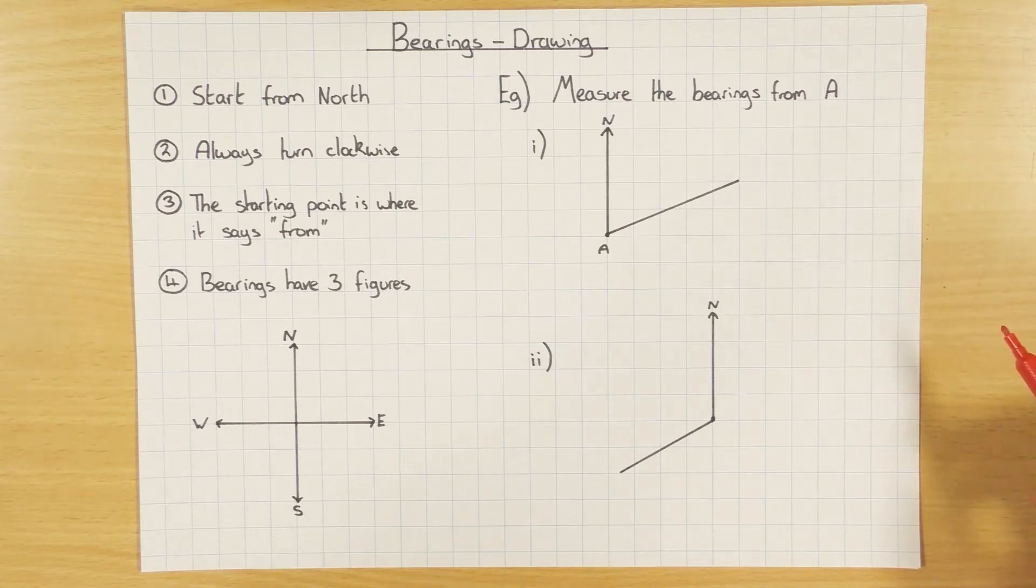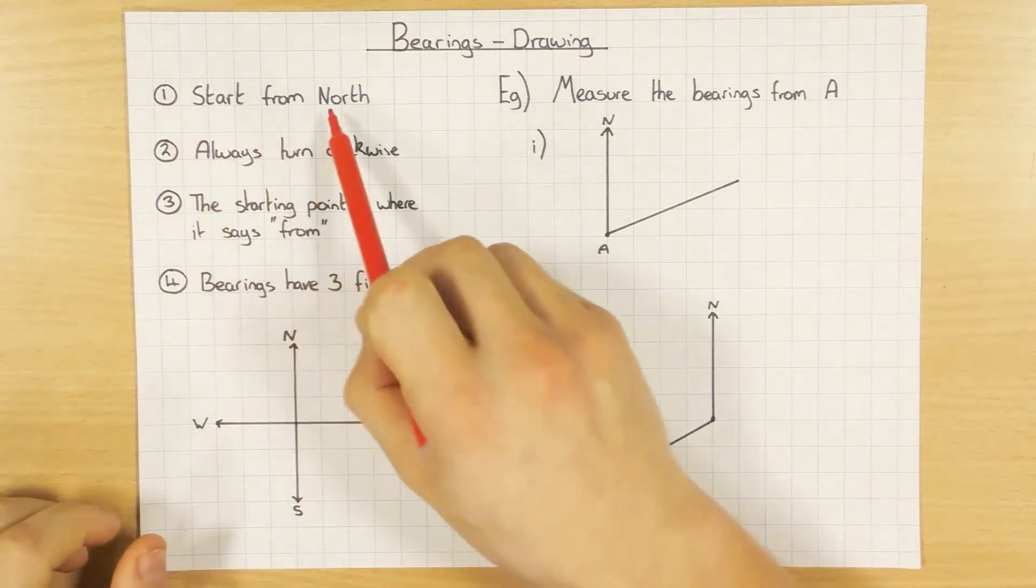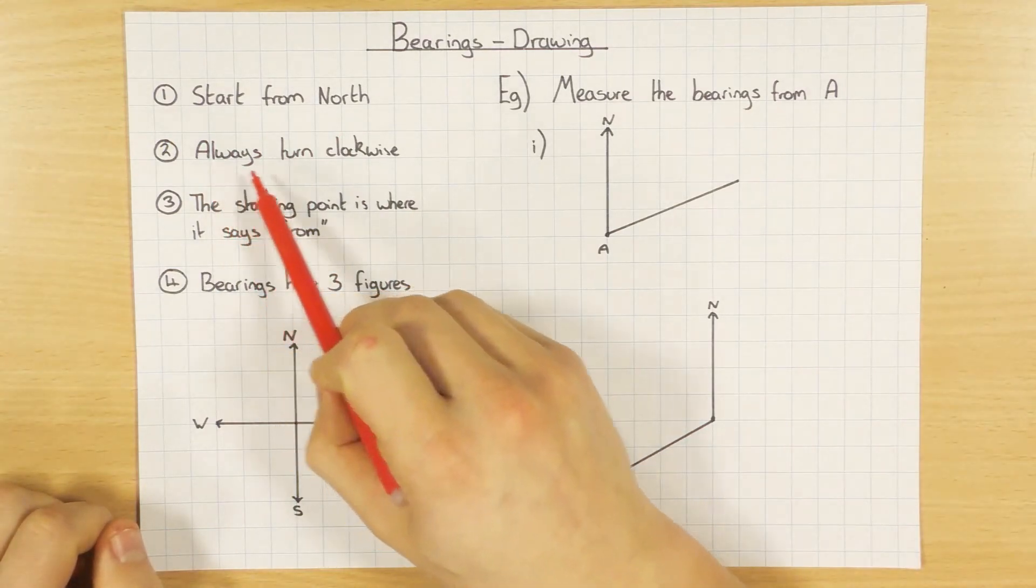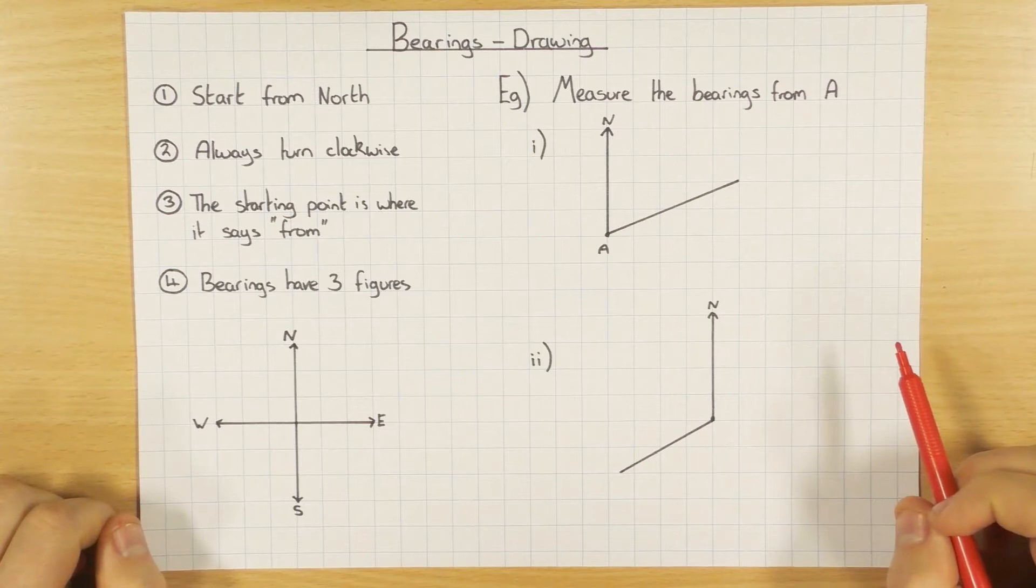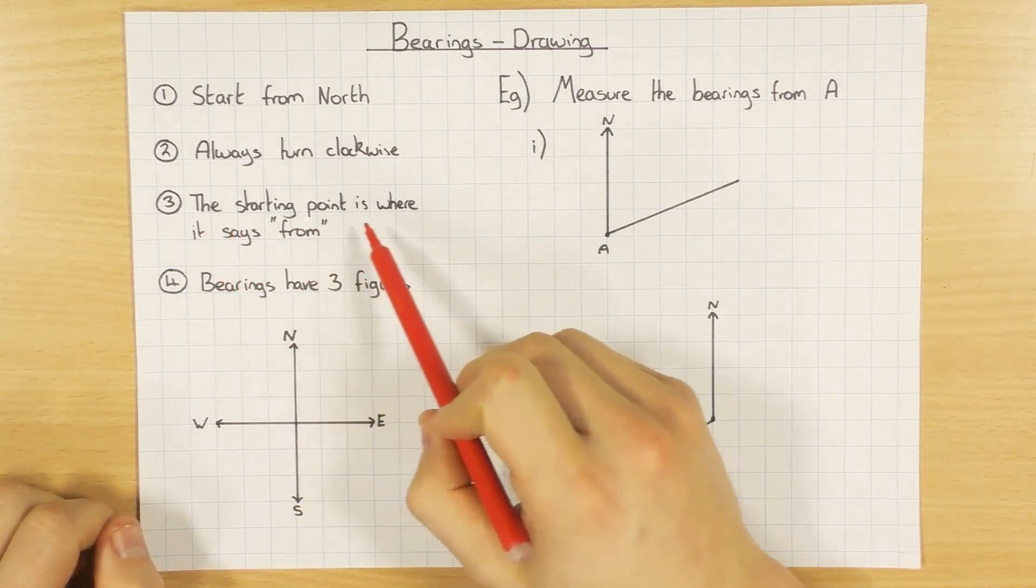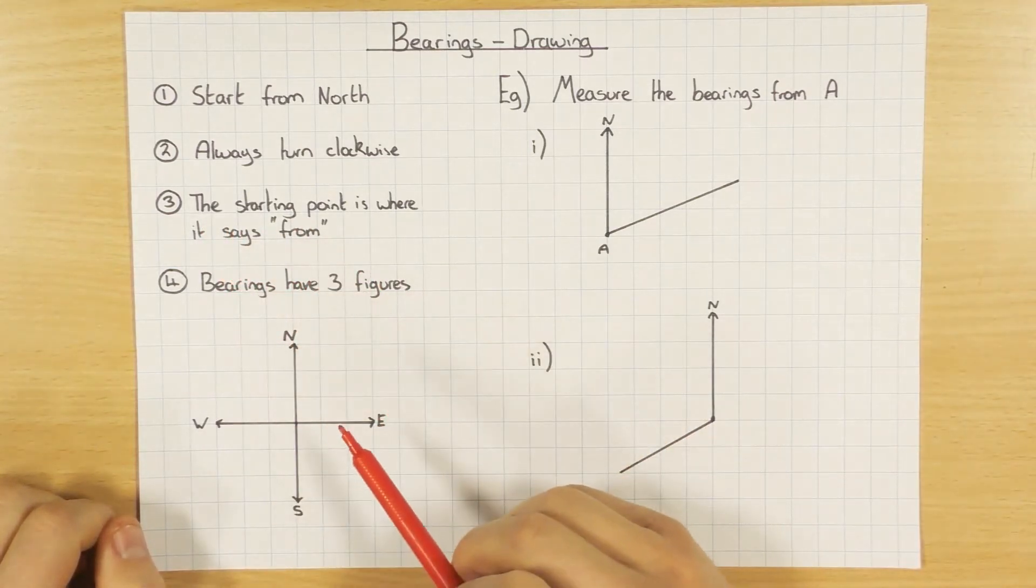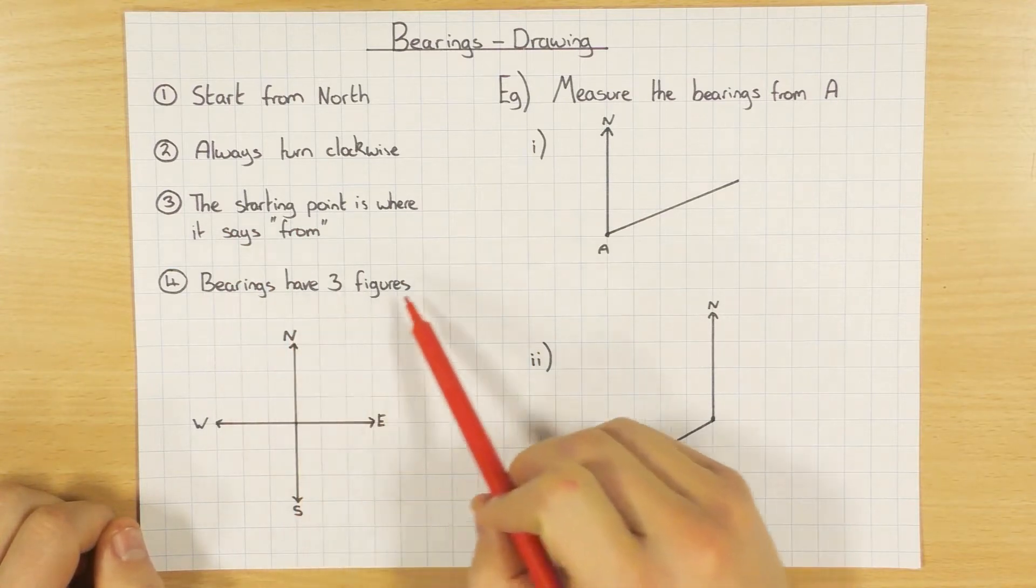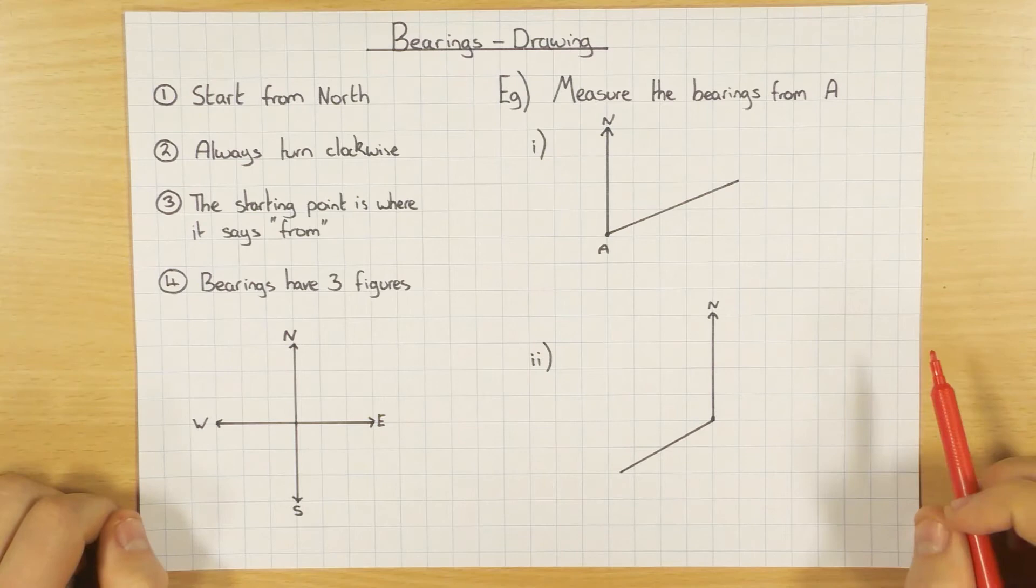So a couple of things just to remind ourselves on. When we're dealing with bearings we always start from north. From north we then always go clockwise. We always start from the point where it says from. And again this one's crucial for this video: bearings are always three figures.